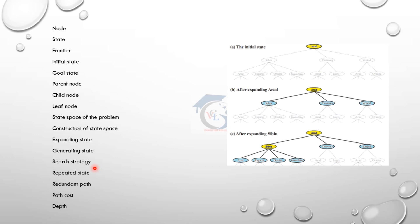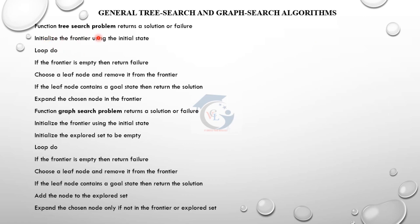The repeated state is when we revisit an already-visited state. If you move through the states, this is repeated state. In the initial state, this is the repeated path — again, a loop path. In this case, we will get the final path, and find the depth and path cost. Two algorithms: tree search and graph search. We can use the explored and unexplored sets to find the solution.